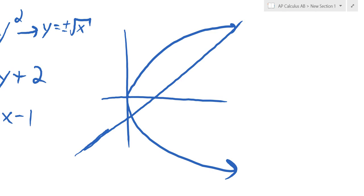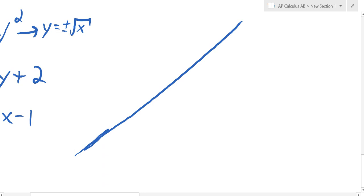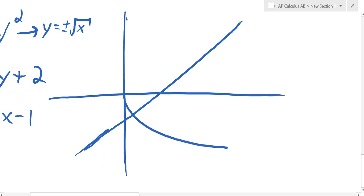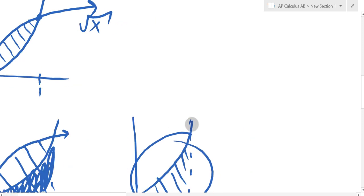The problem is if we try to do top minus bottom: over here the top-to-bottom distance is from y squared to the line, but past this point top minus bottom is y squared to y squared — it changes. We could do it that way but it's more work. However, if we define our areas as right to left instead of top to bottom, then our rectangles look like this.